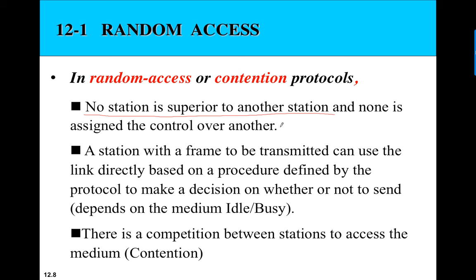In the polling access mechanism, there is a primary station that controls secondary stations. But in random access protocols, there is no such control — all stations are equal. A station with a frame to transmit can use the link directly based on a procedure defined by the protocol. For example, in CSMA/CD, if a station wants to send and the channel is busy, it will wait and not send.